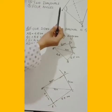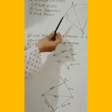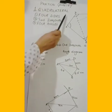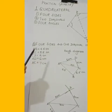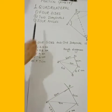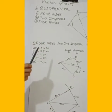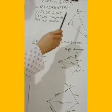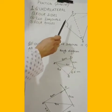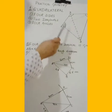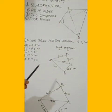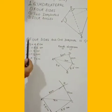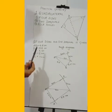These are the dimensions of the quadrilateral. For the construction of any quadrilateral, we will need these parameters — that is, these dimensions. At least the necessary ones must be given so that we can construct the quadrilateral. Let us see the first type of construction.